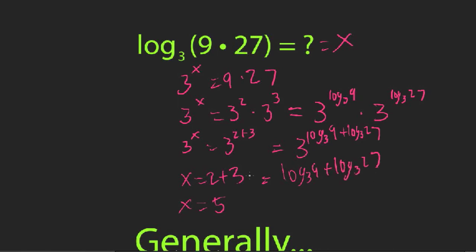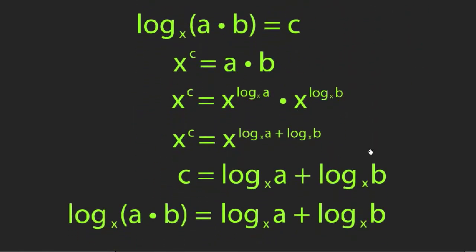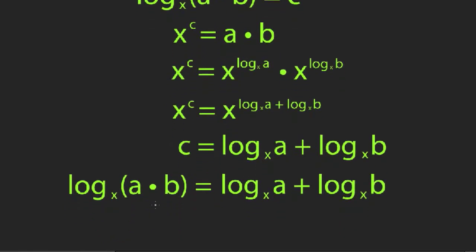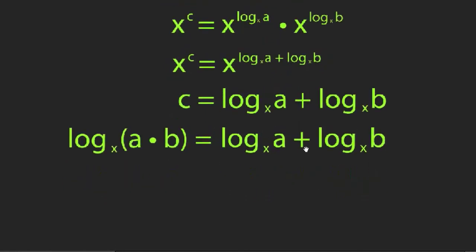And you should look at how similar that is to what we started with, which is all we've done is taken this product and split it up into two different logarithms. And so this is your first rule of logarithms. And here's the proof if that's going to help you. But the basic rule is log base anything of a times b can be split up into log base x of a plus log base x of b. So this is a really useful rule. And it's going to help us prove some of the other rules of logarithms.